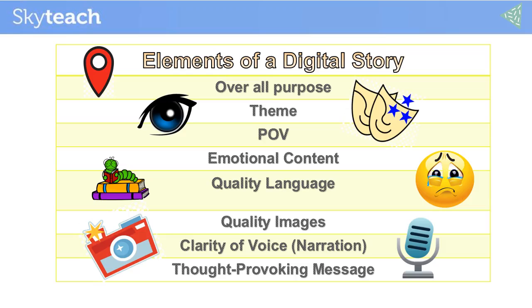Then it's quality language, and as digital story is used here as a tool for language development, this step is very necessary. It is to be assured that the language and vocabulary used are of very good quality, and accuracy is the key. Then quality images — images are actually conveying the message and are one of the most powerful sources for that. So the images should be very clear, meaningful, and not blurred at all.